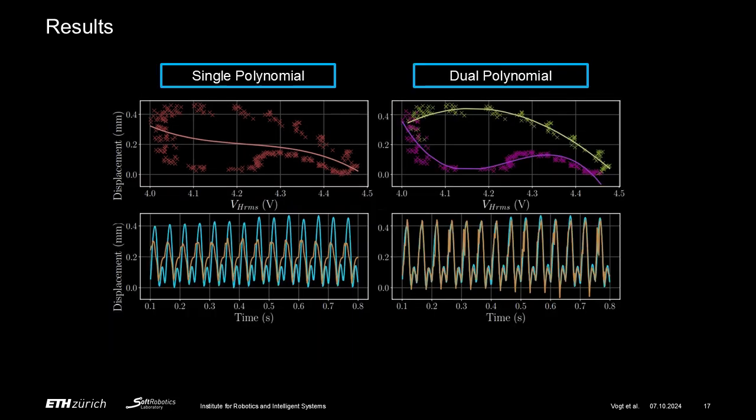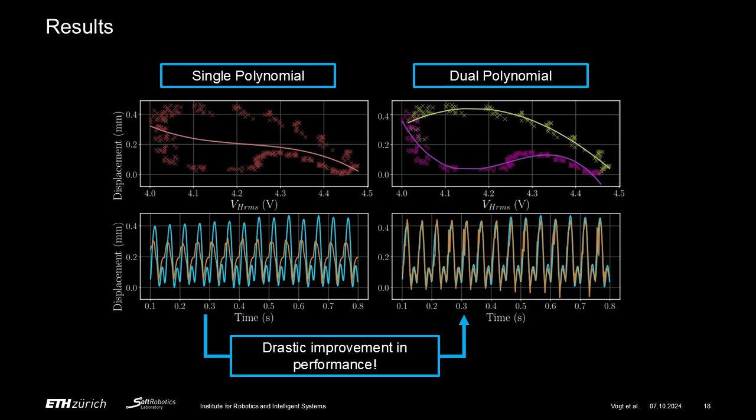To address this, we propose a dual third-order polynomial mapping approach, which considers whether the actuator is contracting or relaxing at the time the displacement estimation takes place, as visible here. This drastically improves sensing performance, bringing the error at 20 Hz actuation frequency from 26% down to 10%.